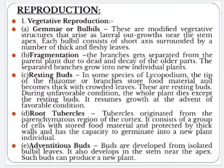Gemmae or bulbils are modified vegetative structures that arise as lateral outgrowths near the stem apex. Each gemma or bulbil consists of a short axis surrounded by a number of thick and fleshy leaves. The gemmae fall on the ground and grow into a new plant. In the case of fragmentation, branches get separated from the parent plant due to death and decay of the older parts, and the separated branches grow into new individual plants.